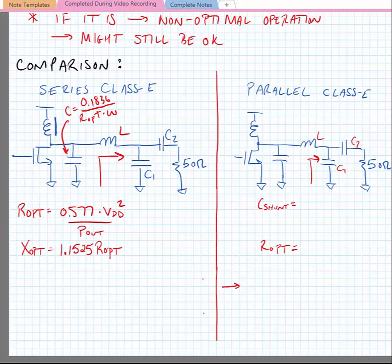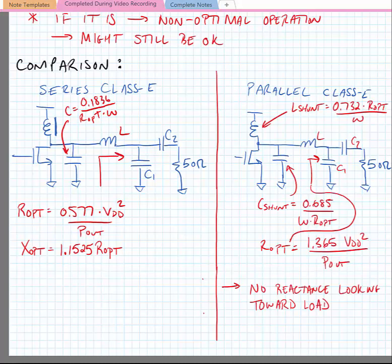And in our parallel class E circuit, we have the following. So we have the shunt inductance, which is no longer a choke, being equal to 0.732 times R-opt over omega, the shunt capacitance equaling 0.685 divided by omega times R-opt, and finally a termination resistance equal to 1.365 times VDD squared over P-out. And we note that we can replace our R-opt with 50 ohms and a matching network, and we don't need to leave any excess reactants looking towards the load.